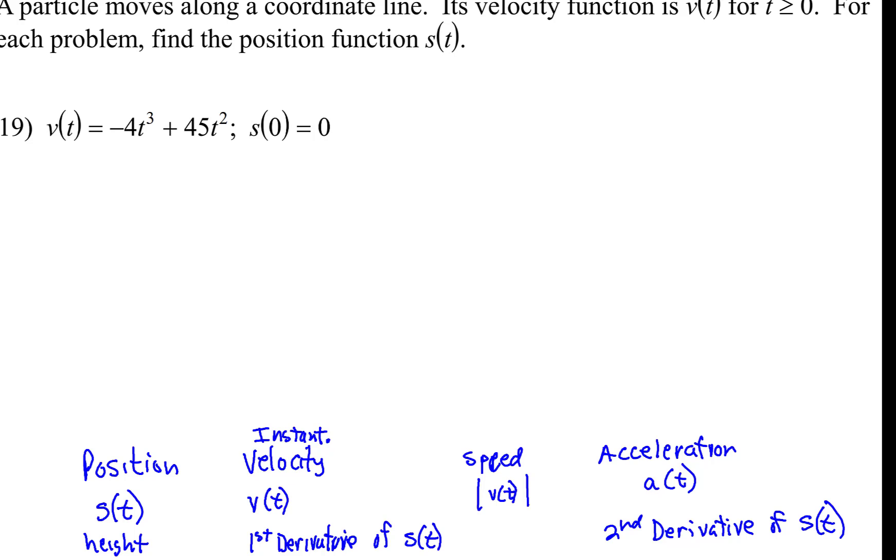Okay, a particle moves along a coordinate line. Its velocity function is v(t) for all t's that are greater than zero because we can't have a negative time. For each problem, find the position function s(t).